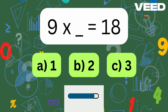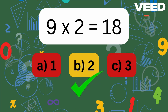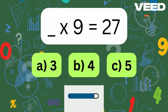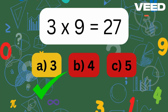9 times what is 18? 9 times 2 is equal to 18. What times 9 is equal to 27? 3 times 9 is equal to 27.